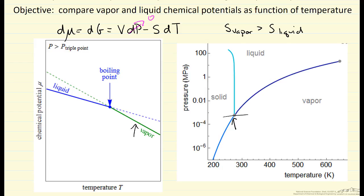At this temperature we have liquid, and raising the temperature gives vapor. However, if we were below the triple point pressure, the transition would be between solid and vapor rather than liquid and vapor. The important point is that the component with the lower chemical potential is the stable phase at a given condition, and we can relate how chemical potential changes with temperature to the entropy.